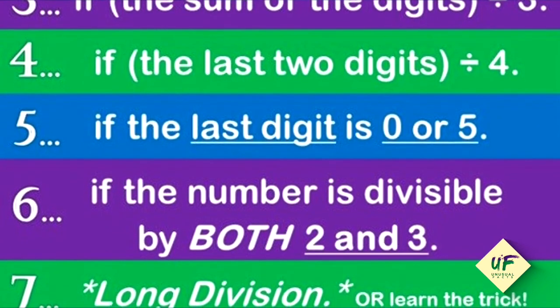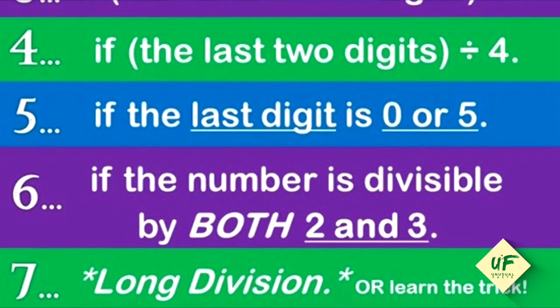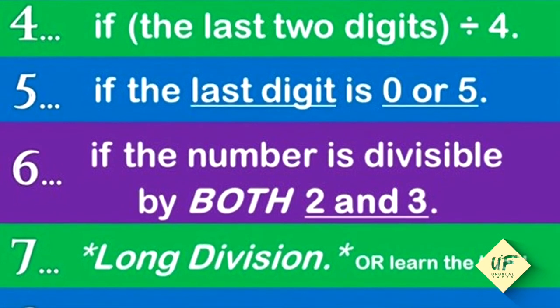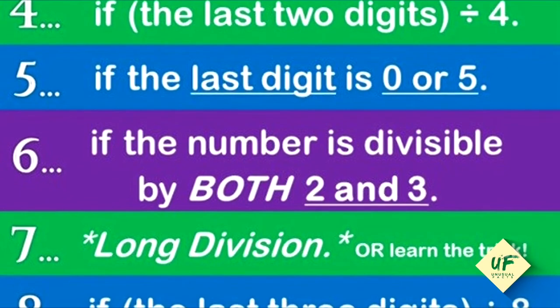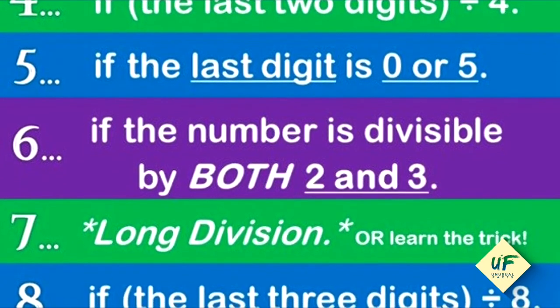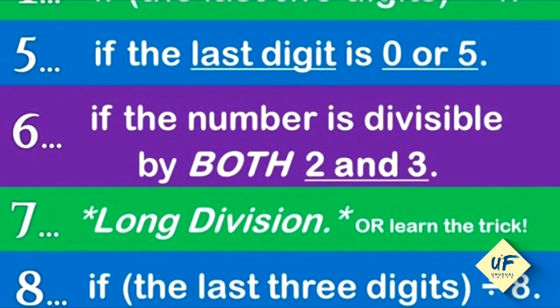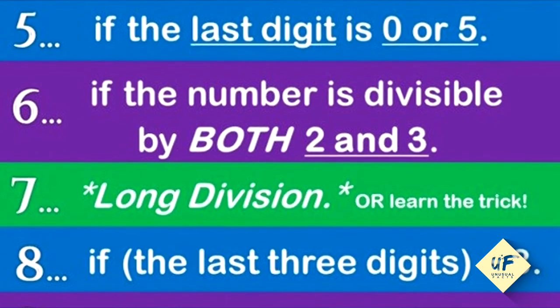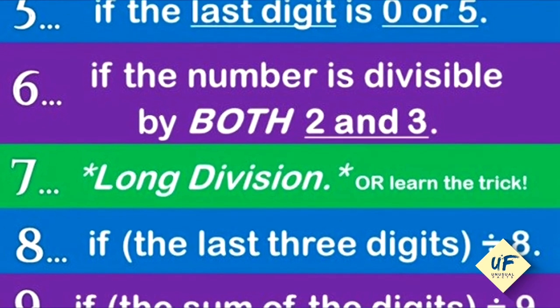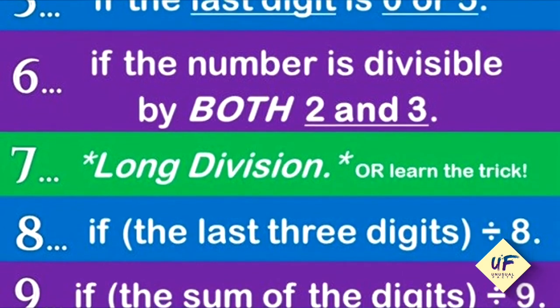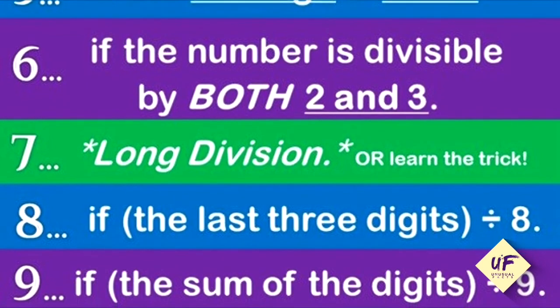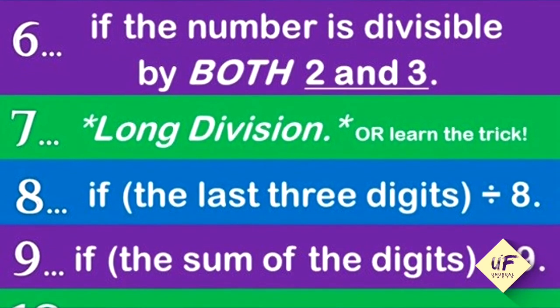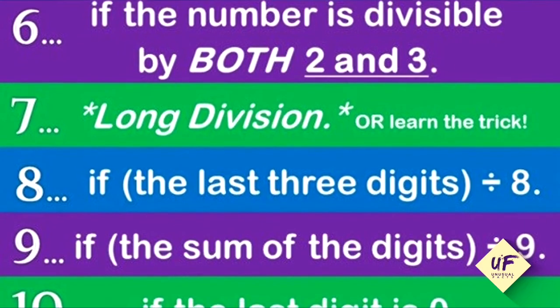A number is divisible by six if the number is divisible by both two and three. A number is divisible by seven—long division, or you should learn the trick. A number is divisible by eight if the last three digits are. A number is divisible by nine if the sum of the digits is divisible by nine. A number is divisible by ten if the last digit is zero.